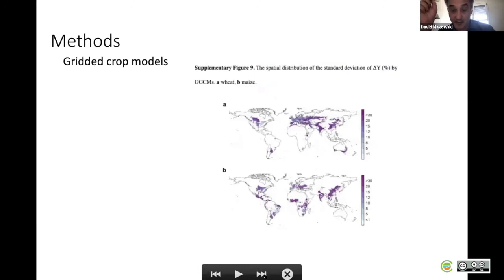I don't show you the 10 maps corresponding to the 10 model simulations, but here you can see the spatial distribution of the standard deviation across the 10 models for wheat at the top and maize at the bottom. The standard deviation is pretty high, something like 20-30% in many locations, showing big discrepancies between the crop models.